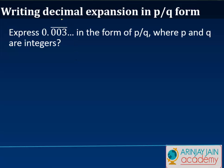Writing decimal expansion in a p by q form. Now it may just happen that you are given a decimal expansion, which is, let's say for example in this case, express 0.003 where 003 is repeating itself, in the form of p upon q where p and q are integers.